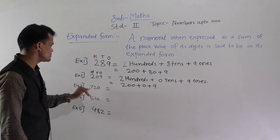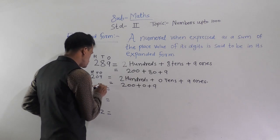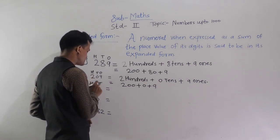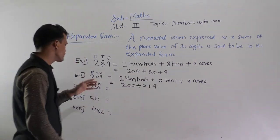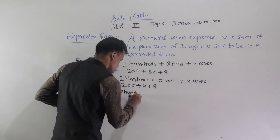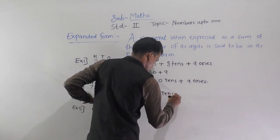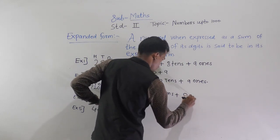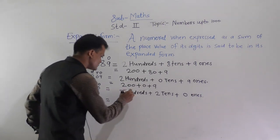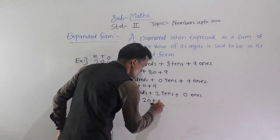The next number is 720. See the position of each digit: 7 comes at the hundreds place, 2 comes at the tens place, and 0 comes at the ones place. Write the place value of each digit: 7 hundreds plus 2 tens plus 0 ones. In numerals: 700 plus 20 plus 0.